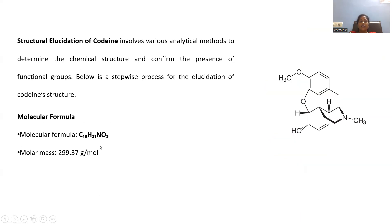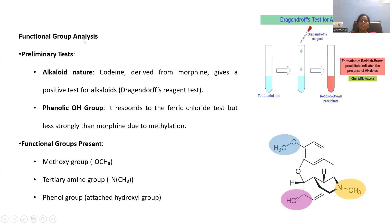After getting these minimum identification components, we go with functional group analysis where preliminary tests are carried out. For alkaloid nature — whatever alkaloid we know — if treated with Dragendorff reagent, which is common for identification of all alkaloids, the test solution turns into a brick-red or reddish-brown color precipitate. That is the characteristic reaction confirming the presence of alkaloids, identifying whether the extracted compound is an alkaloid or not.